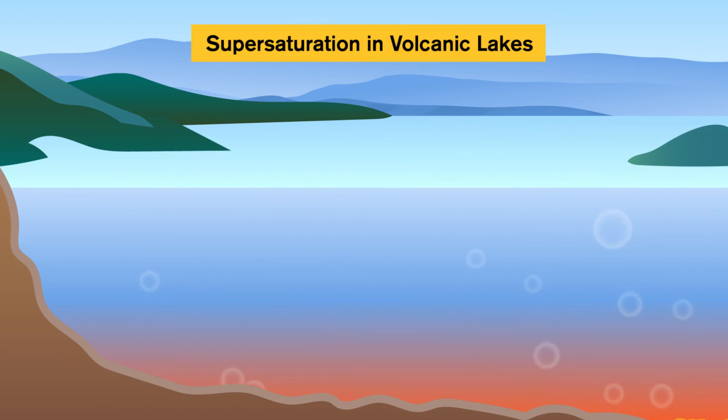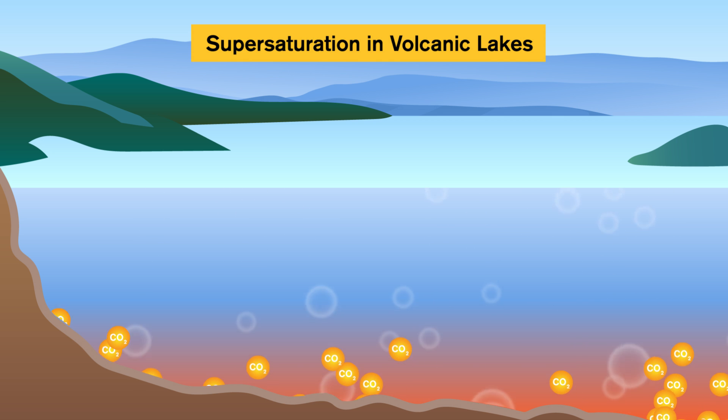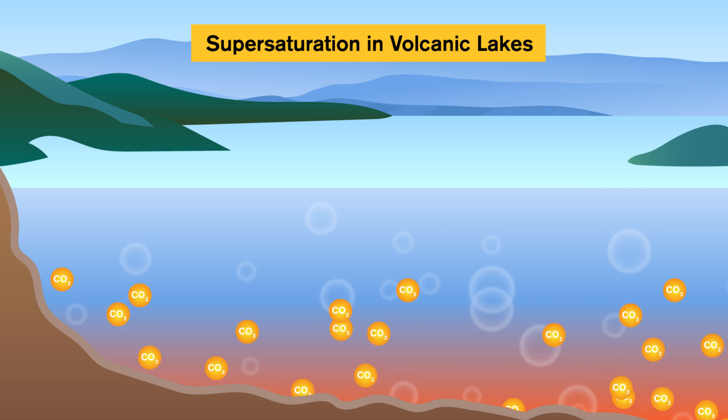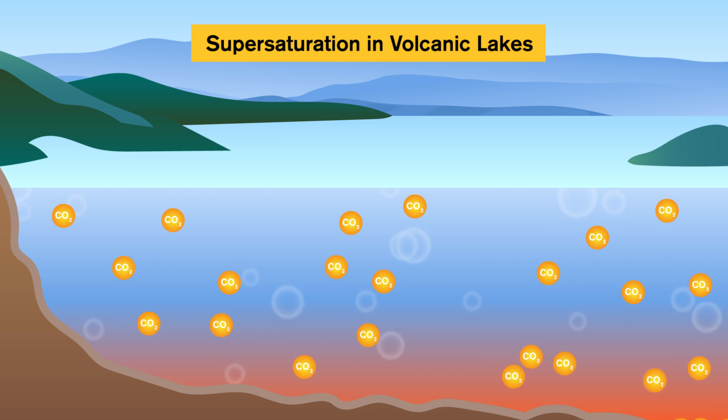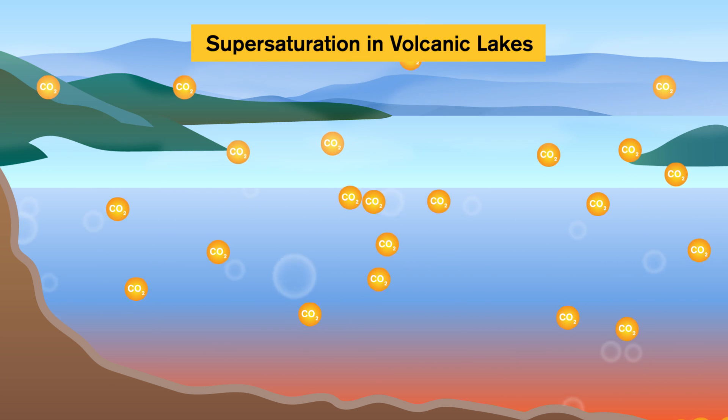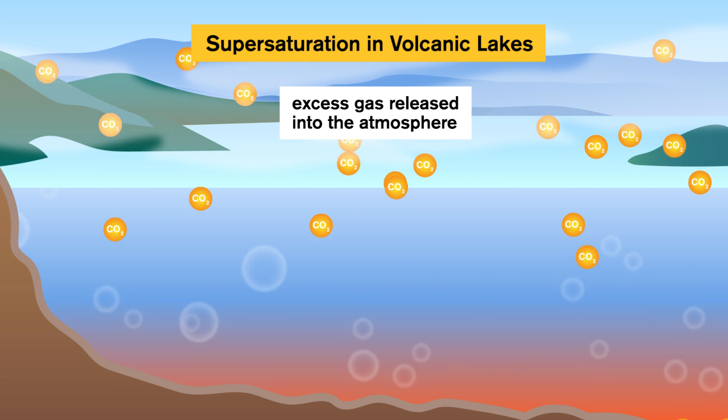Think of this like musical chairs. Every atom of solute finds a partner in the solvent up until there are no more left, and the rest of the solute has to stand awkwardly off to the side. With a high enough amount of salt in the water, we'd see salt granules at the bottom. We can see supersaturation in volcanic lakes too — carbon dioxide gas is emitted through volcanic activity and supersaturates in the water. Since there's too much carbon dioxide absorbed, some is released back into the atmosphere.